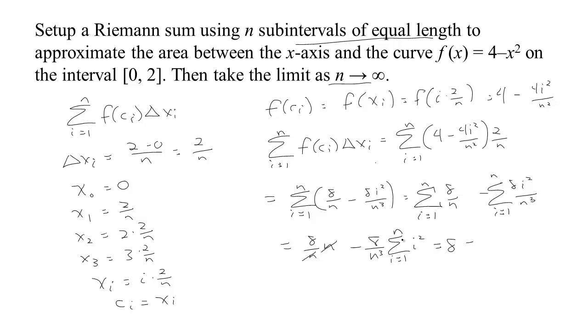So I have 8 minus—knowing the formula for the sum of the first i² is n times (n+1) times (2n+1) all over 6.